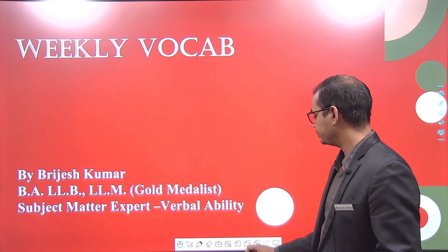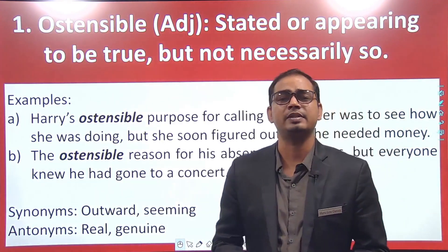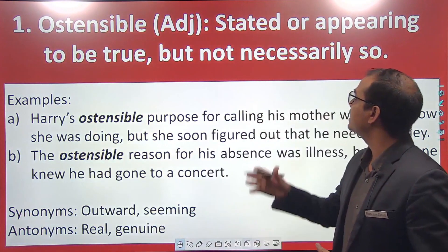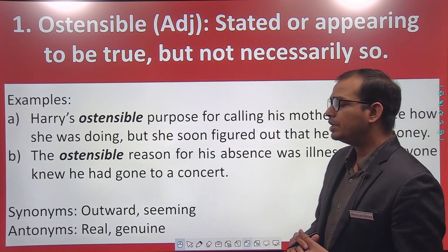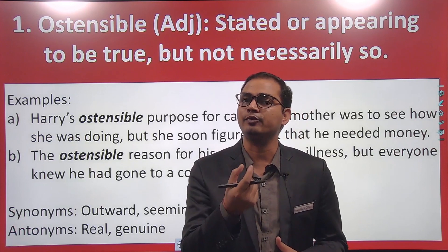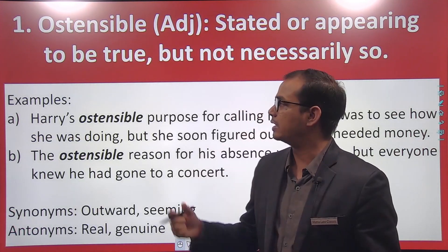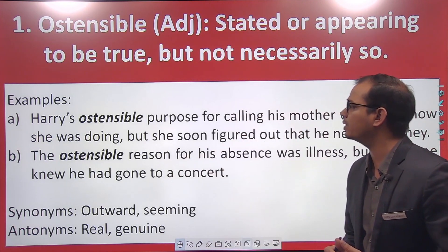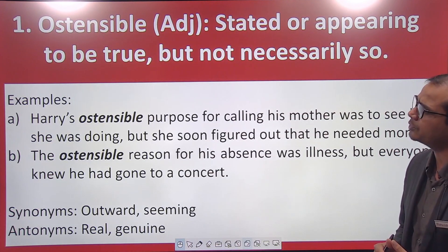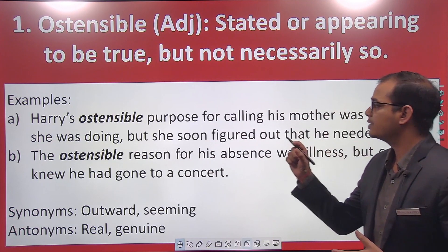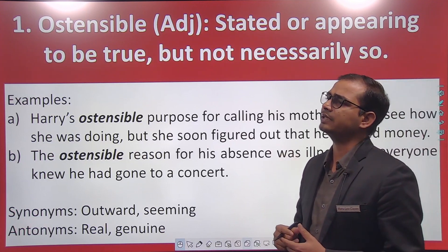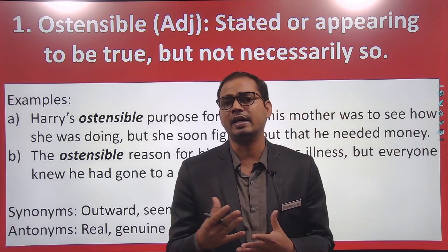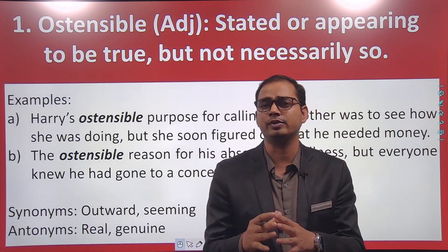So let's get started. The first word in the list is 'ostensible.' Ostensible means stated or appearing to be true but not necessarily true. For example, Harry's ostensible purpose for calling his mother was to see how she was doing, but actually he needed money. Harry called his mother pretending to ask about her, but he actually needed money.